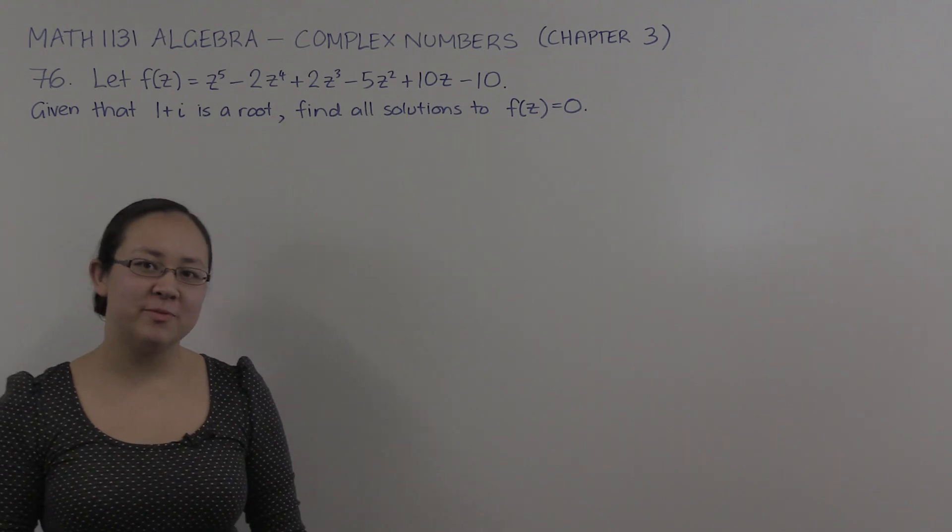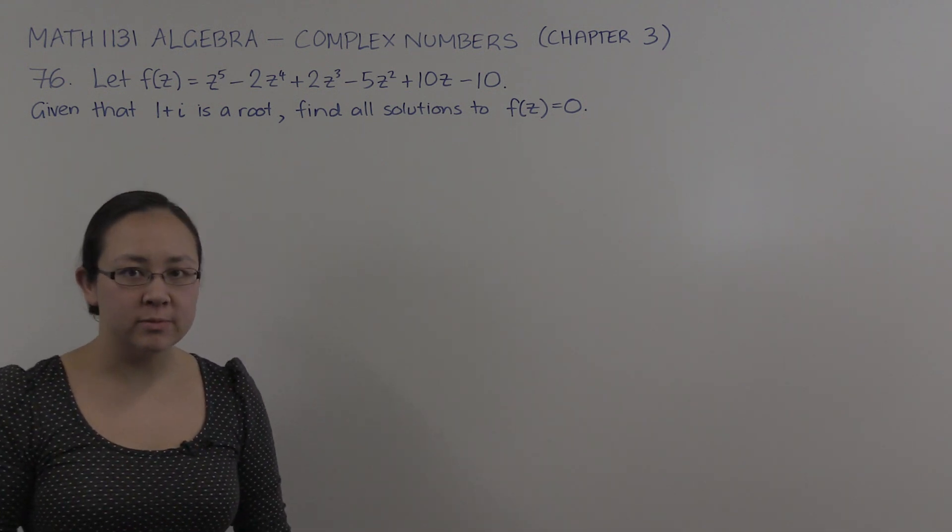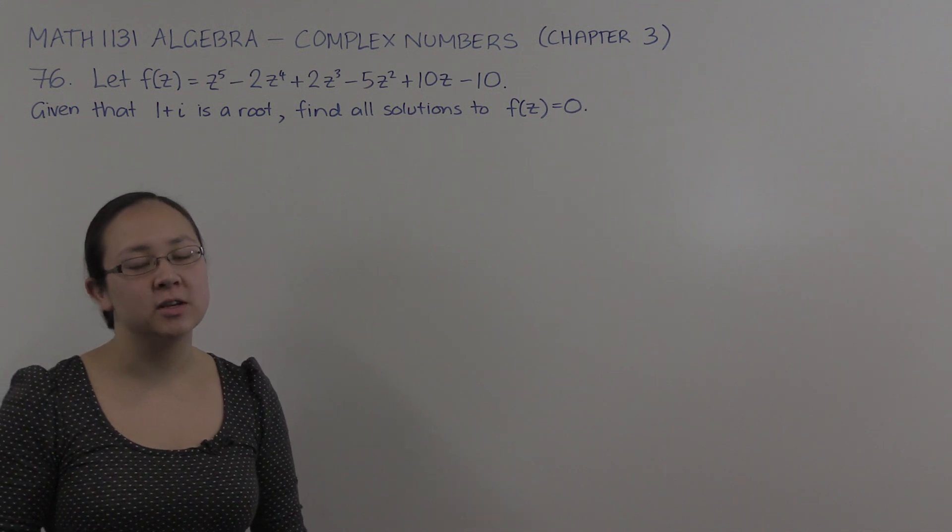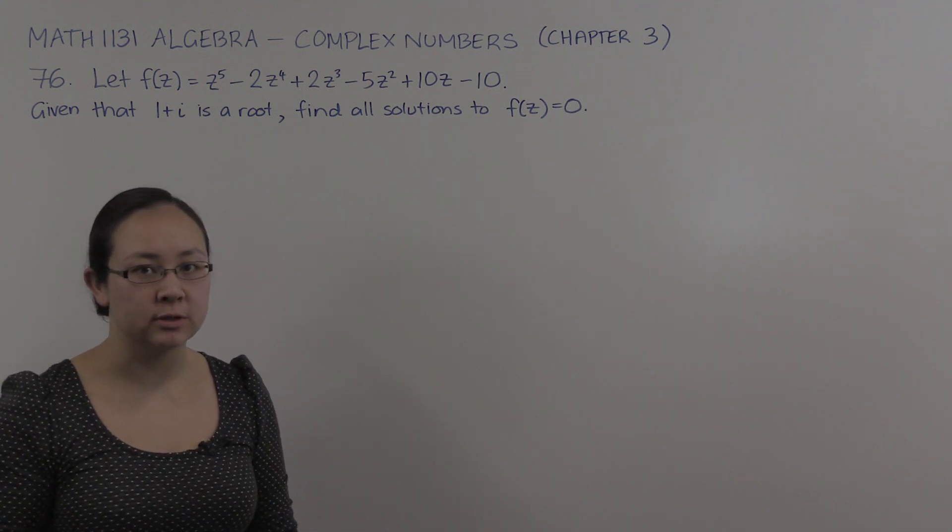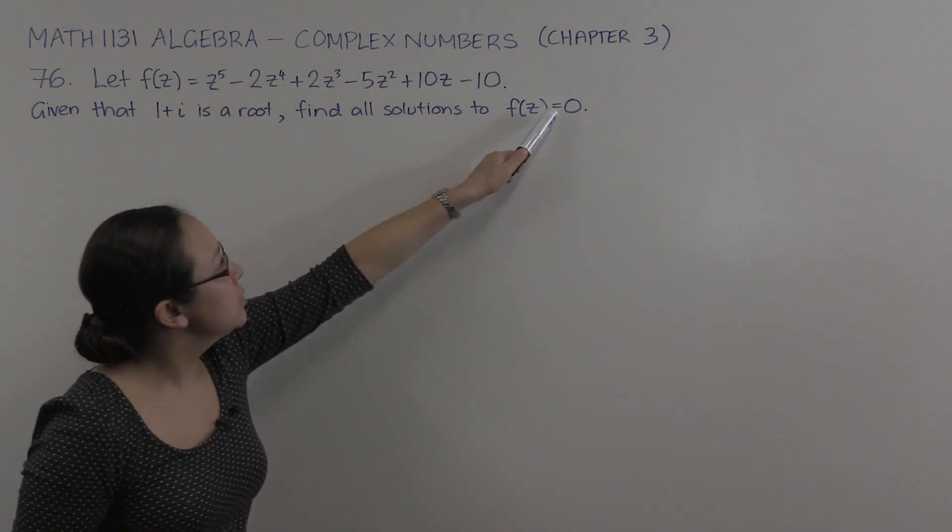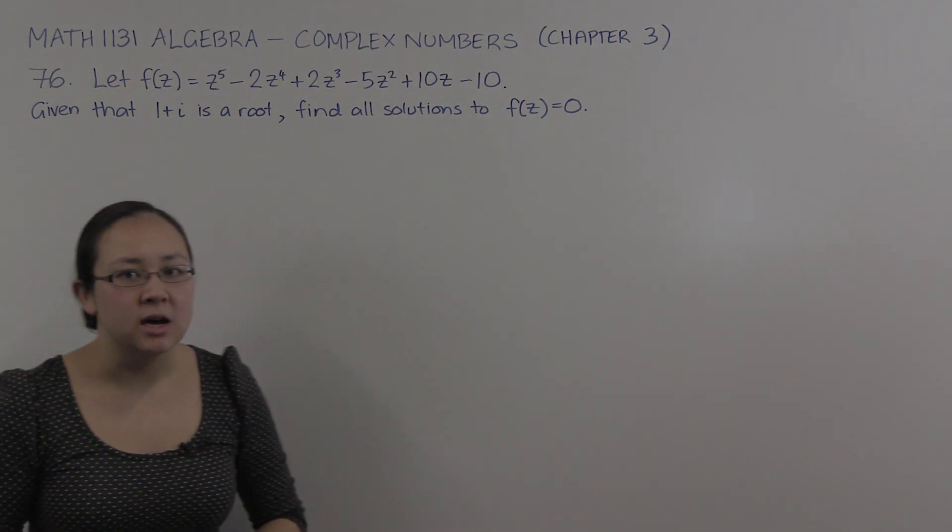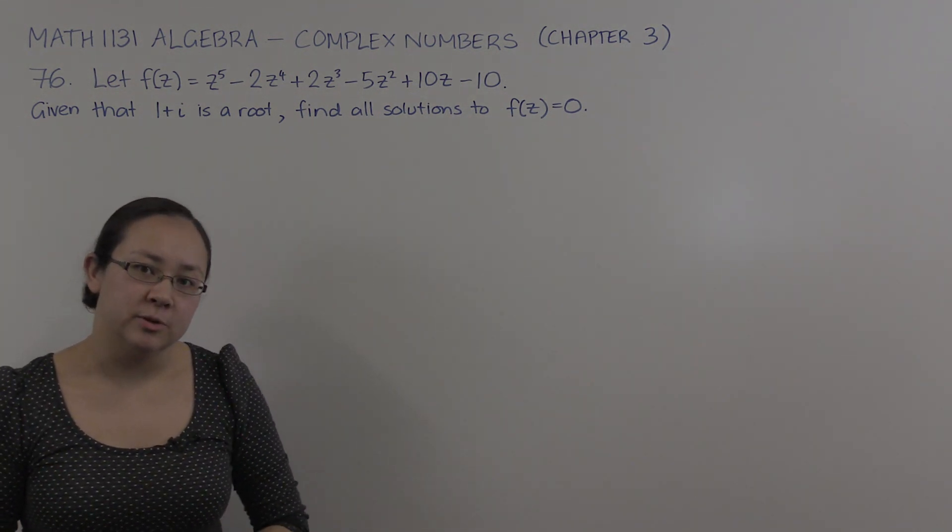Hello, my name is Tanam Shor and I'm from the University of New South Wales. Today we're going to be looking at a problem from the complex number chapter of the Math 1131 Algebra course. So it's problem 76. We're asked to find all the roots of this polynomial equation. We've got a quintic here. We want to solve it equal to 0 and they're giving us the fact that 1 plus i is a root of this polynomial f of z.